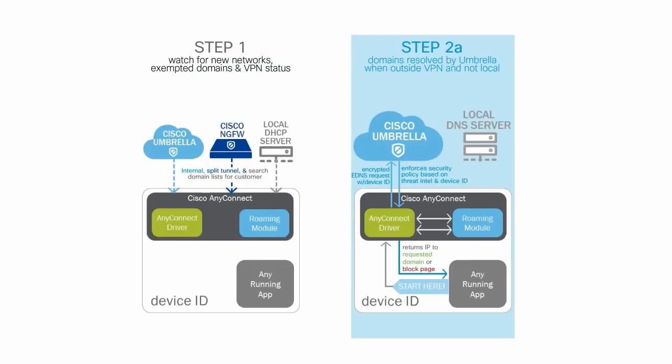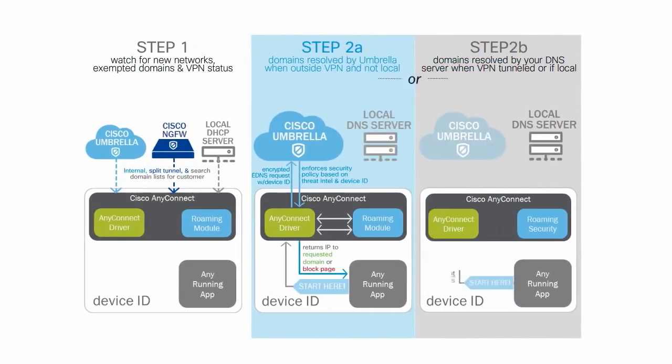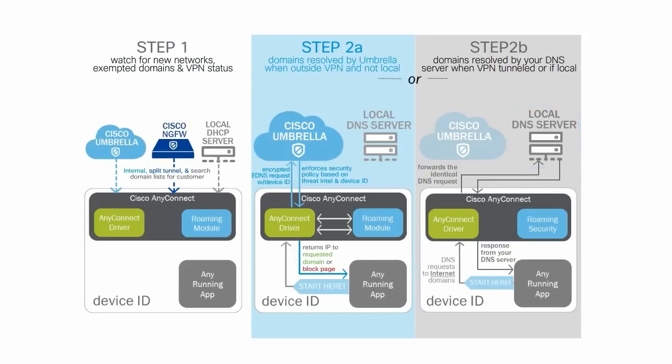The second step depends on whether a DNS request is for an internet or internal domain name. Our client embeds a unique identity into the DNS request that matches the device's host name, and encrypts the DNS request to prevent man-in-the-middle eavesdropping. When our global network receives this DNS request, it checks our cache and your policy for this device. If the destination is safe, we return the registered IP. If it is malicious, we return the IP of the Umbrella block page servers. If it contains mixed content, we return the IP of the Umbrella cloud-based proxies to filter at the URL level.